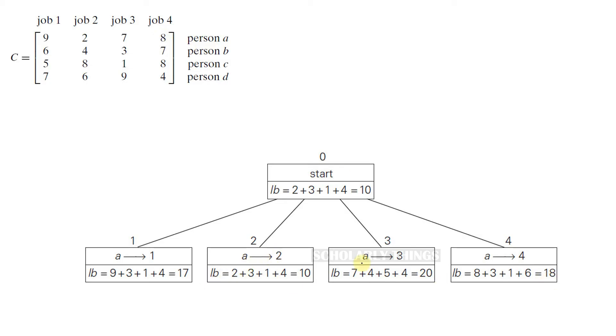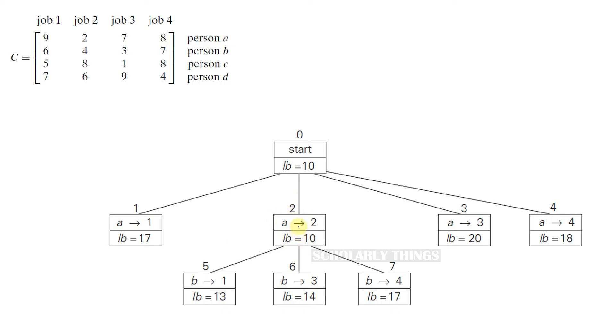Among these, node 2 is most promising, so let's branch out from this node 2. Node 2 had the smallest lower bound so we chose to continue from node 2. Now at level 2, we are making the choice of job for person B.